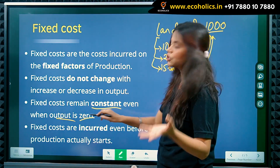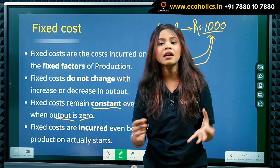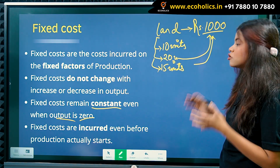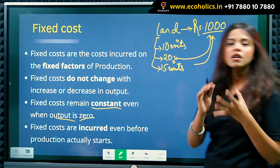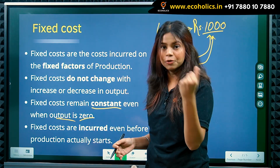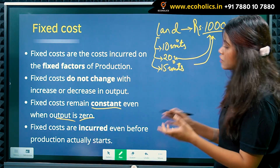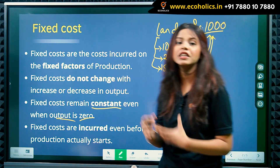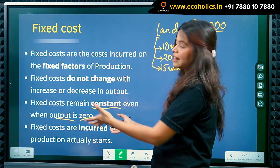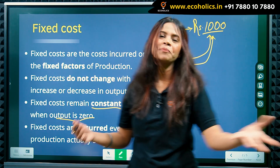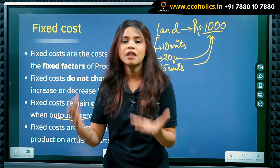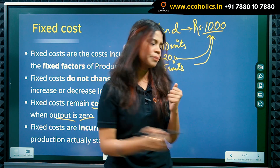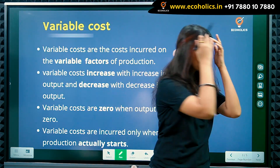If your output is zero, you still need to pay some amount — that is your fixed cost. Fixed costs remain constant even when output is zero. Furthermore, fixed costs are incurred even before the production actually starts. So even before production starts, you have to pay the fixed cost.